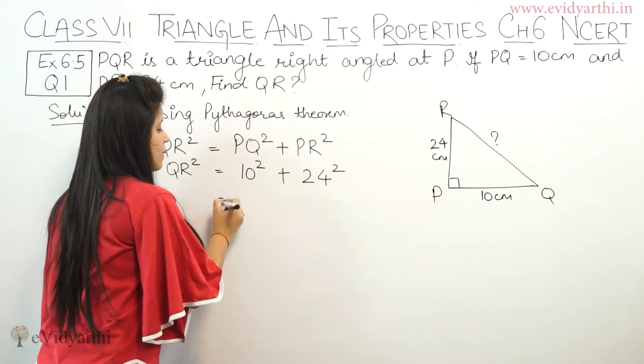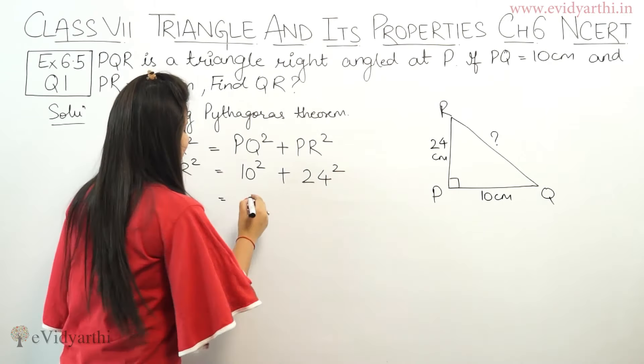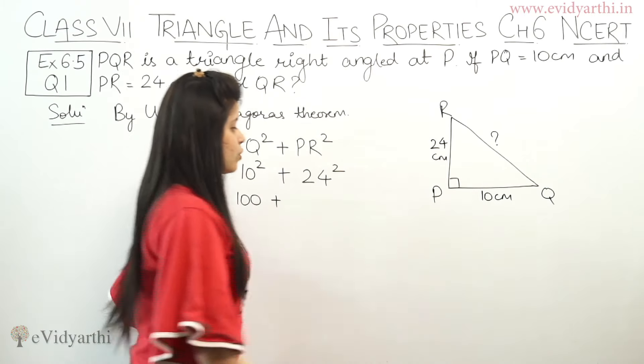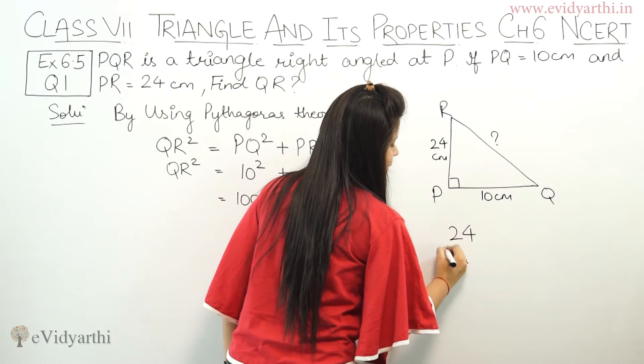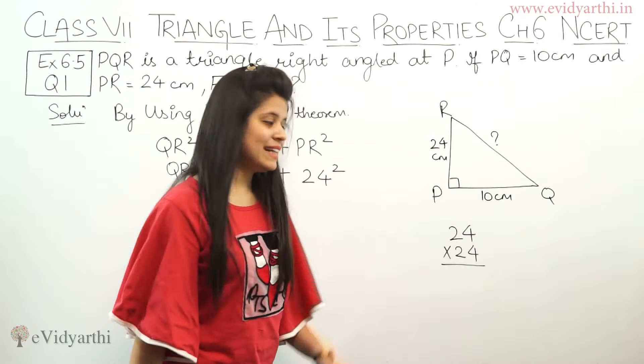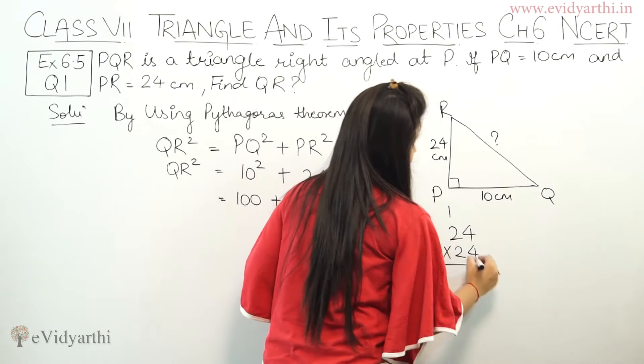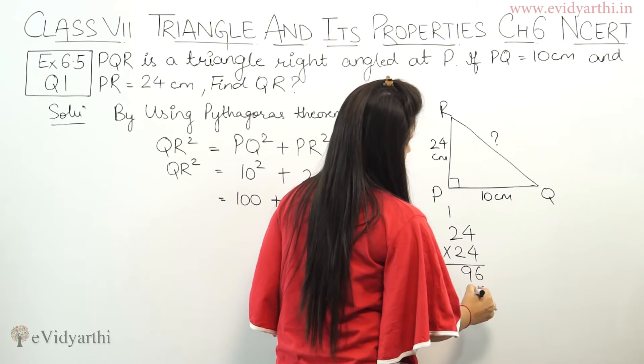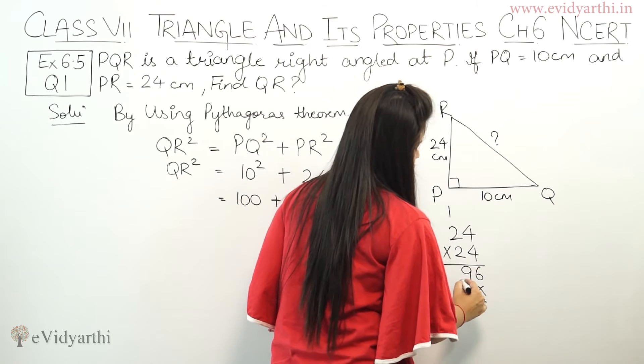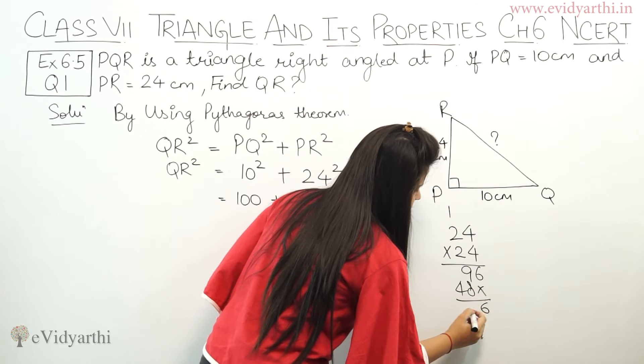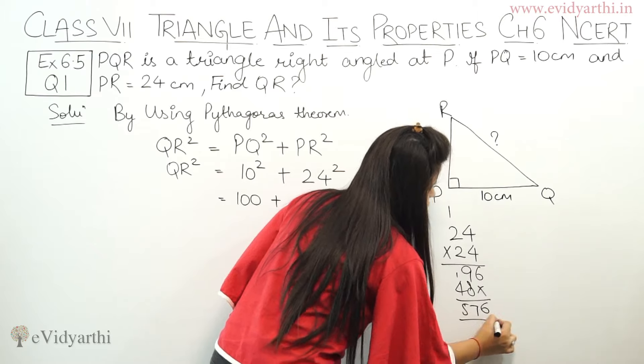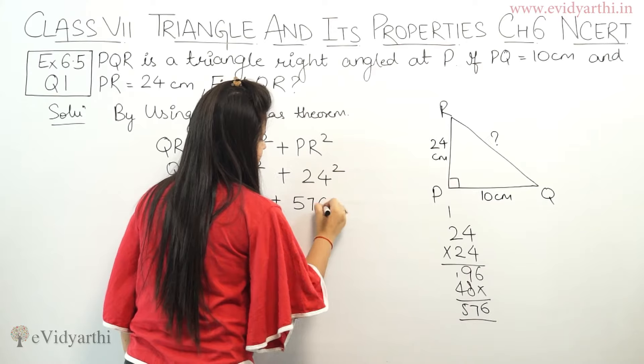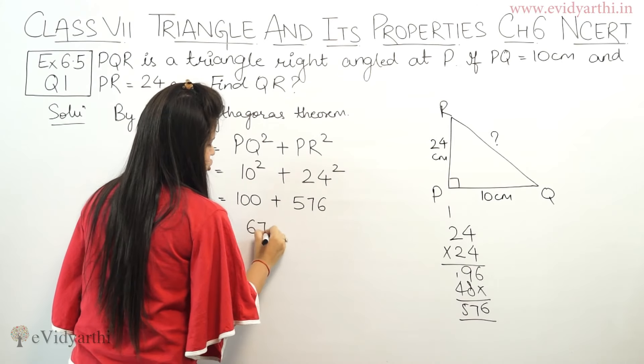Now, 10 square means 10 into 10, which is 100, plus 24 square. 24 square, we have to calculate. So 24 multiply by 24: 4 into 4 is 16, 4 into 2 is 8, plus 1 is 9. This will be 48, then 24. Let's add: 6 and 16 is 17 carry 1, 5, 7, 6. This is 576.